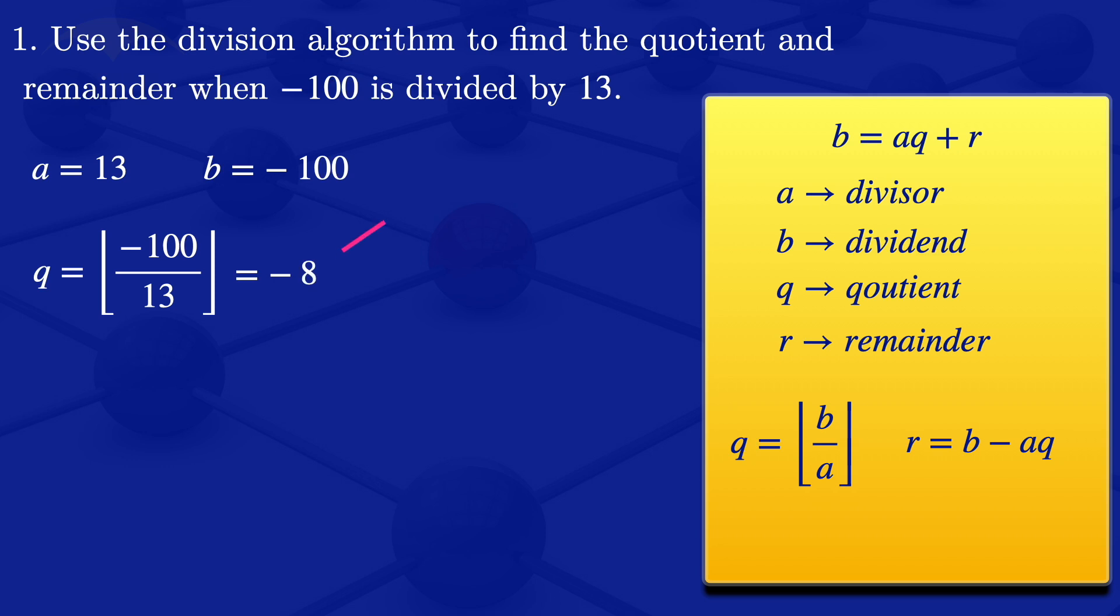We can now use this Q to find the remainder using this formula here. So we'll be having that our R will be equals to minus 100 minus 13 times minus 8. And that is 4. So that's the remainder there, 4.